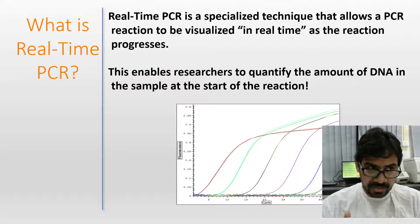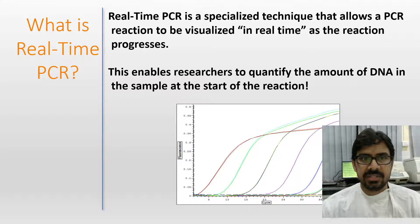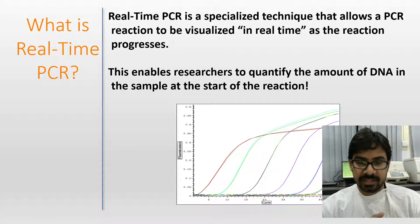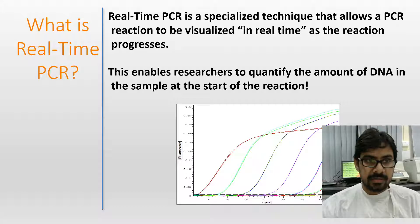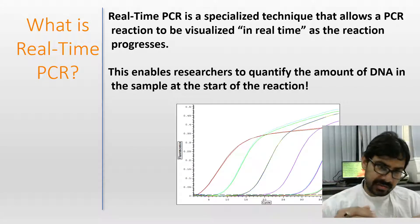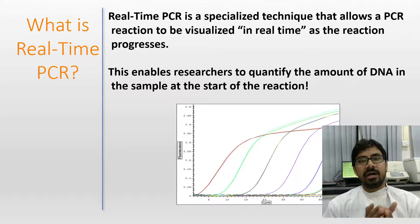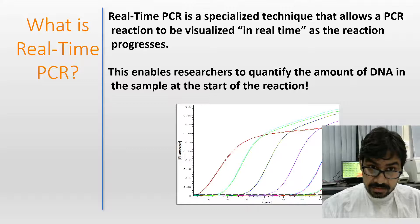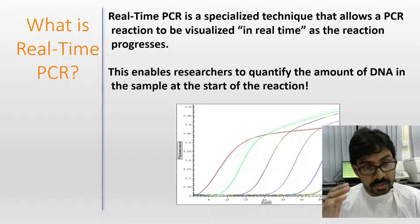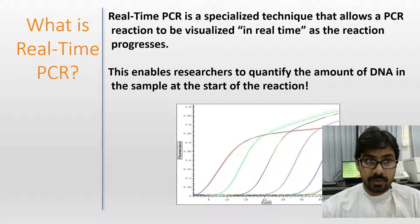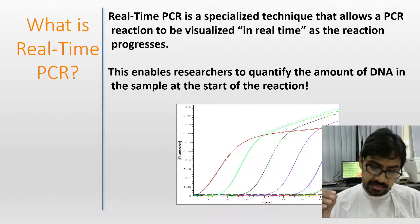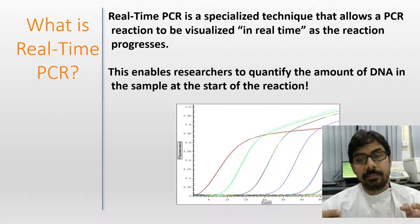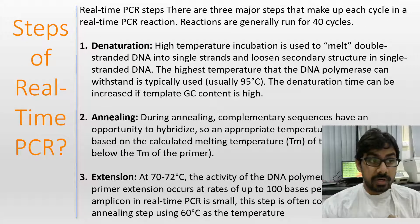Starting with the definition: real-time PCR is a specialized technique where, as the name suggests, you get the reaction result on a real-time basis as the reaction proceeds. This enables researchers to quantify the amount of DNA in the sample at the start of the reaction. As soon as the master mix gets the targeted DNA, you get results — unlike normal PCR where you have to go to gel electrophoresis.